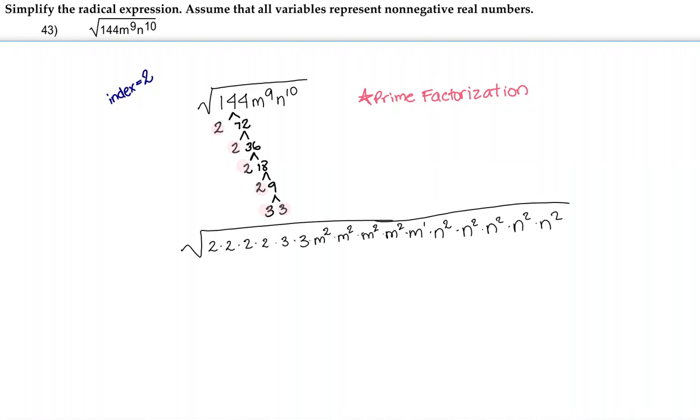Now we can easily see our groups of 2. As for the constants, we have a group here, a group here, and a group here. Let's take out a 2, another 2, and a 3.